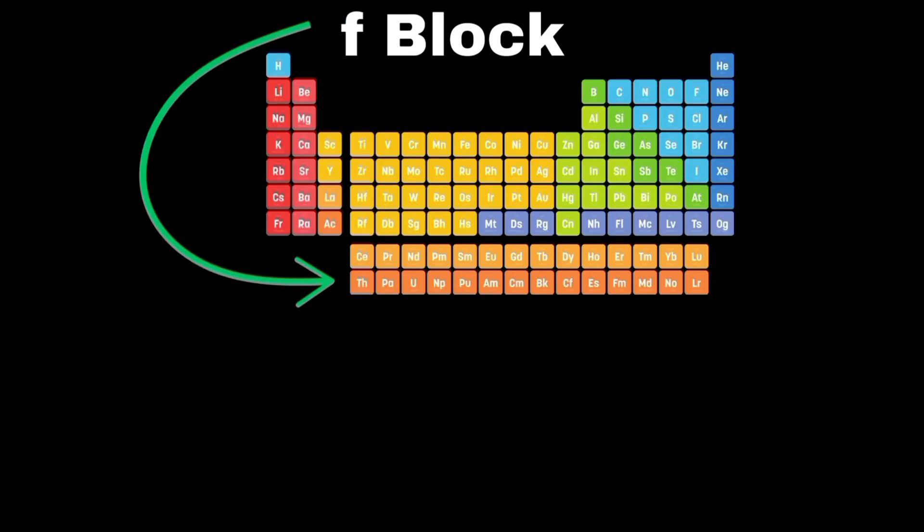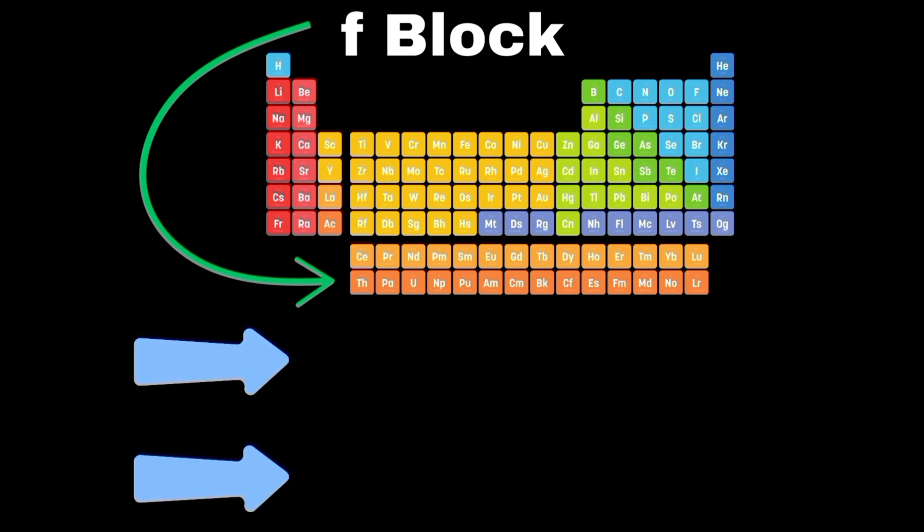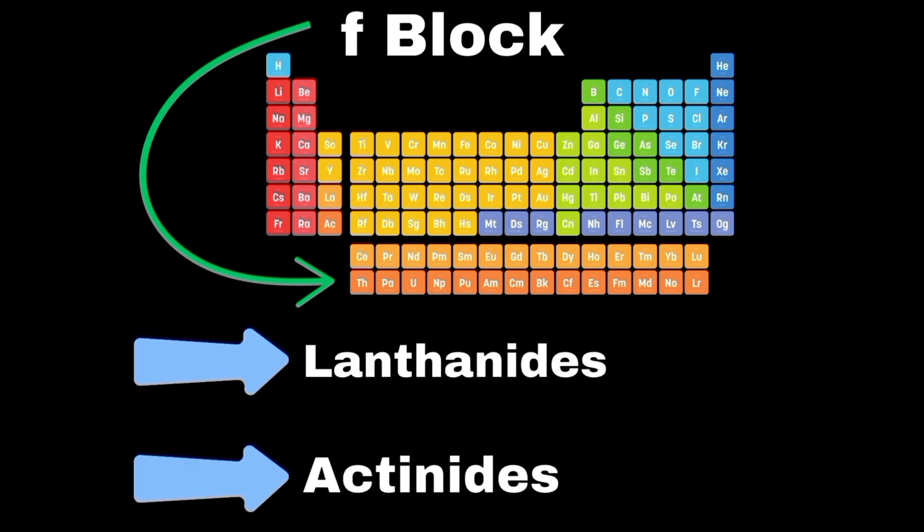Finally, the F block, found below the main table, includes the lanthanides and actinides, which are rare earth elements often used in advanced technologies.